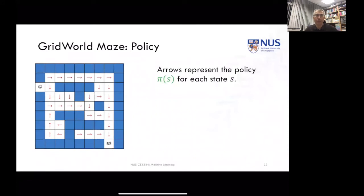Let's take a look at the policy. If I have a policy, that means for each viable state — all the white squares — I have to decide how I'm going to map that state into an action. In a case of a deterministic policy, we might have something like what the arrows indicate: if I'm at a particular point, my policy tells me I'm going south. If I had a probabilistic policy, then maybe I could go up, down, or to the right with some probability.